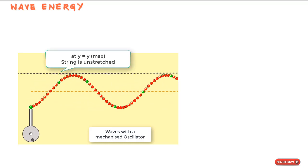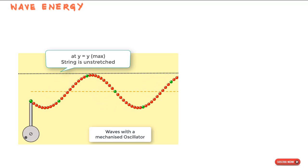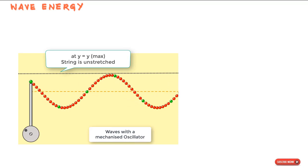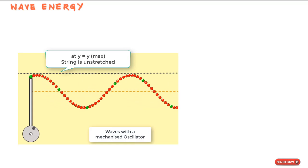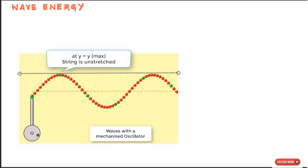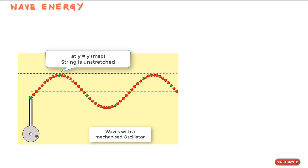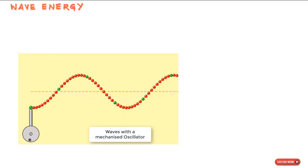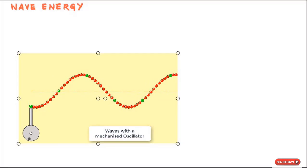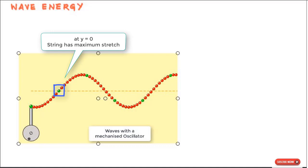At y = y_max (the amplitude position), the string is at its normal unstretched value dx — it is not stretched at maximum displacement. Therefore, the elastic potential energy is zero at that position. However, at y = 0 (the middle position), the string has maximum stretch and thus maximum elastic potential energy.